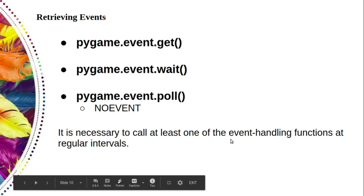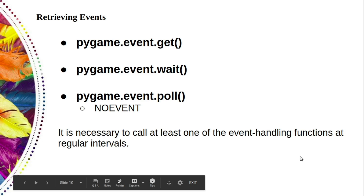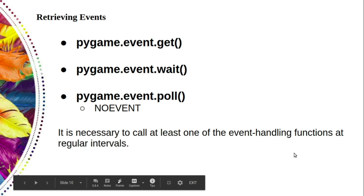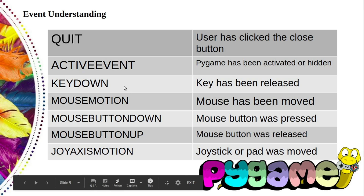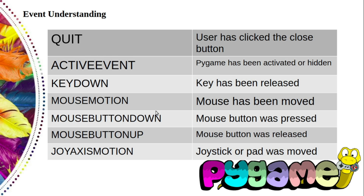An event object contains a few member variables that describe the event that occurred. The information they contain varies depending on the event. The only thing common to all event objects is the type, which is a value that indicates the type of the event — it is the value you first query so you can decide what to do with that event. This table contains some standard events that we may receive.